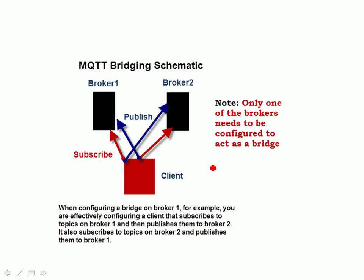You should note that only one of the brokers is actually configured as a bridge. The other broker — in this case broker 2 — is just a standard broker. So the entries in the config file for bridging are done on one of the brokers, and not necessarily both.